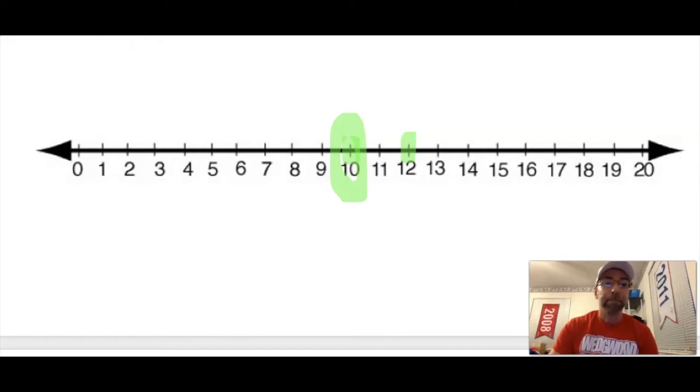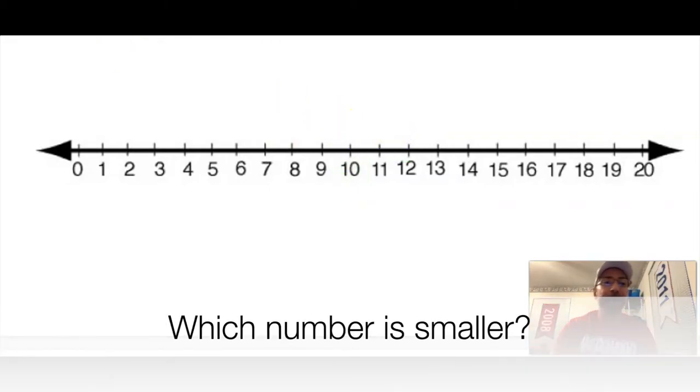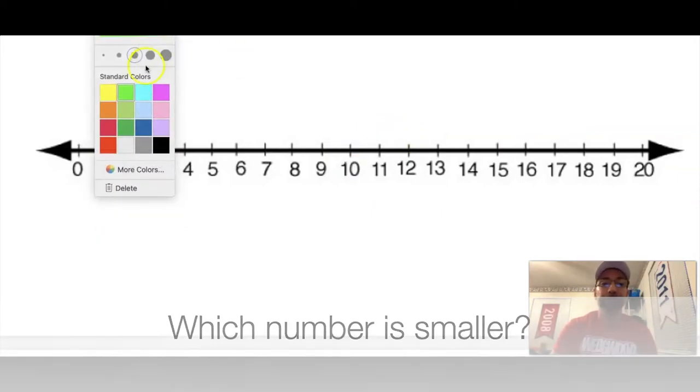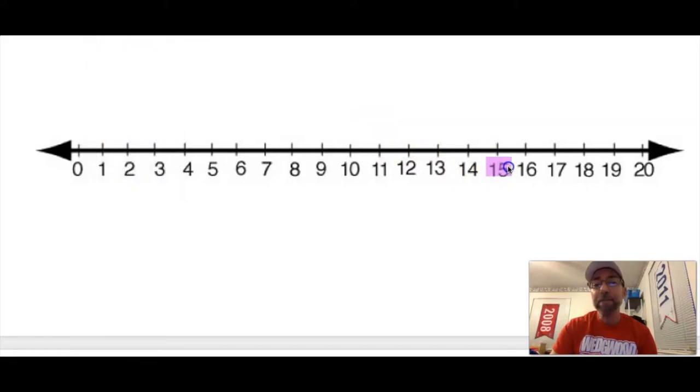Let's try one more. Which number is smaller, is it the 15 or the 14? Which one's the smaller number? The smaller number is closer to zero. So the first number I get to when I count would be 14. So 14 is the smaller number. That means 15 is the bigger number. Awesome job.